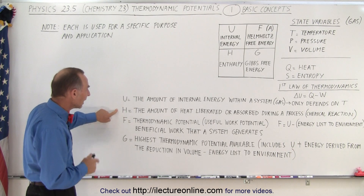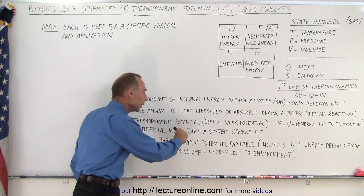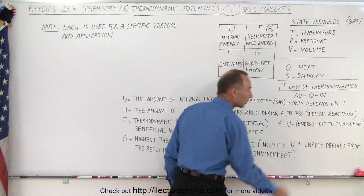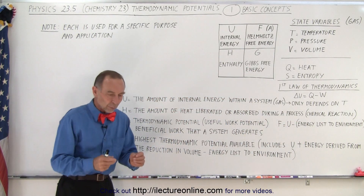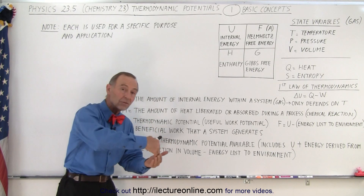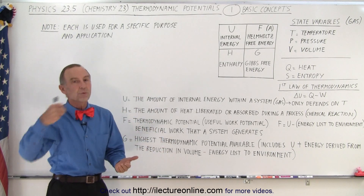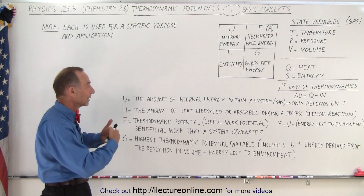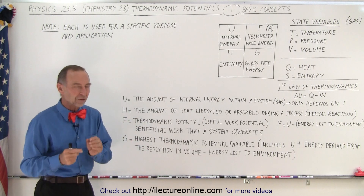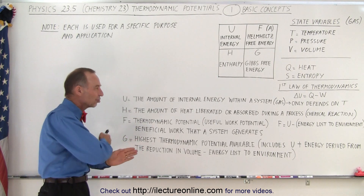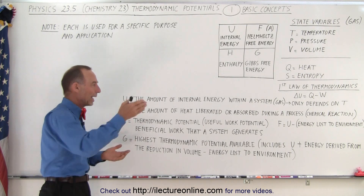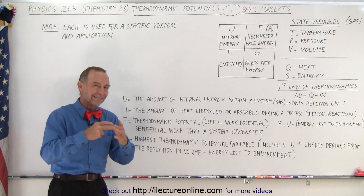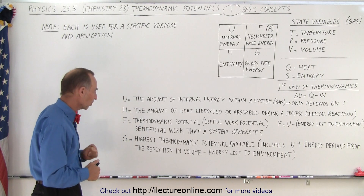Enthalpy, represented by H, is the amount of heat liberated or absorbed during a process — typically a chemical reaction. When a chemical reaction occurs, heat is either added to or removed from the reactants, and we calculate the enthalpy based on that. Enthalpy is an exchange of energy, either given off or absorbed, whereas internal energy is the amount of energy within the system itself. That's why they cannot be used interchangeably.